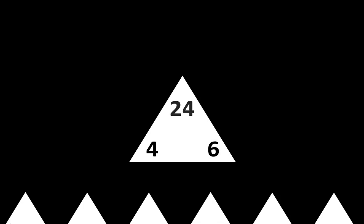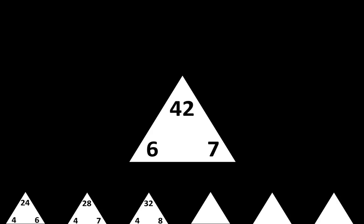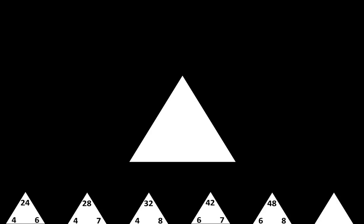Let's move to the last row. The next one is 4 times 6 is equal to 24. The next one is 4 times 7 is equal to 28. The next one is 4 times 8 is equal to 32. The next one is 6 times 7 is equal to 42. The next one is 6 times 8 is equal to 48. And the last one is 7 times 8 is equal to 56.